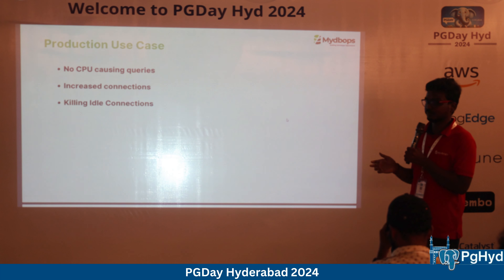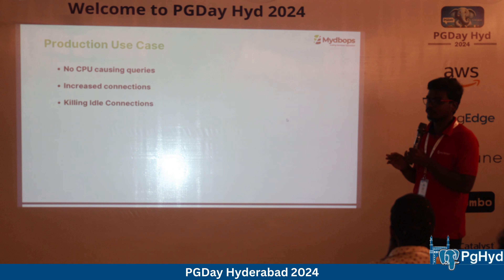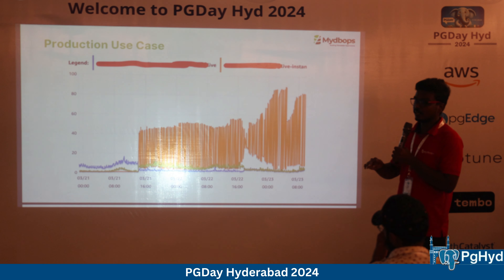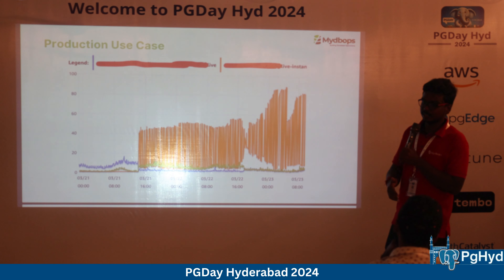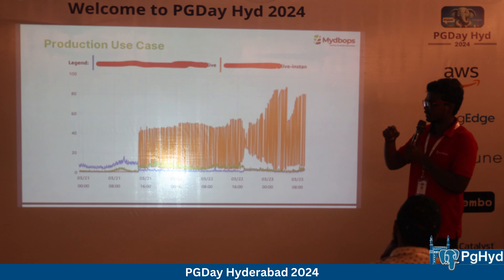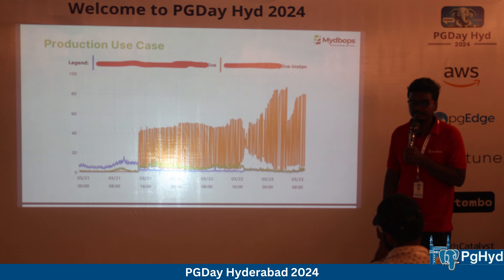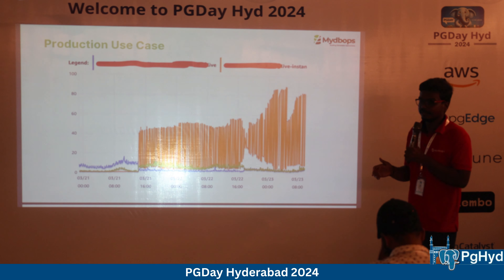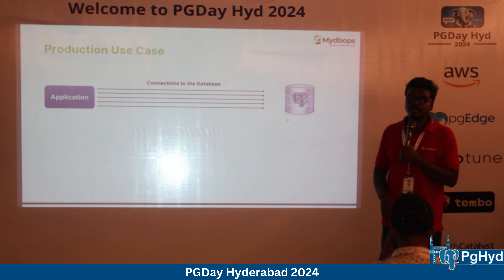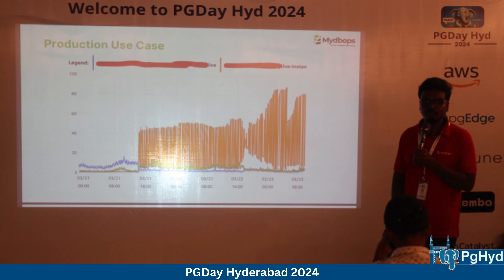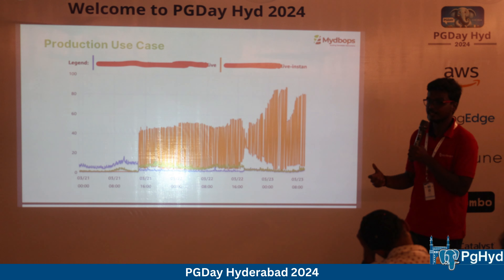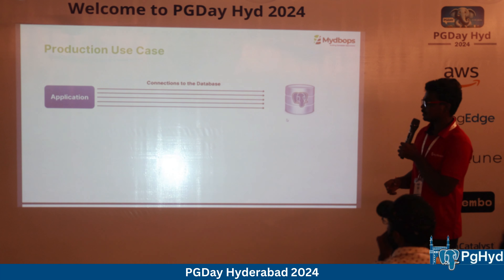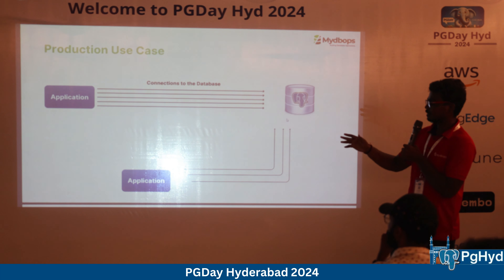A real production use case: a few months ago, a customer had very high CPU usage for a week on an AWS EC2 instance (8 vCPU, 64 GB RAM). They hadn't done any new deployments, yet CPU was consistently around 90%. After we installed monitoring tools and audited the server, we found no CPU-heavy queries; all vacuums were normal. The only anomaly was an increased number of connections starting from a specific date.